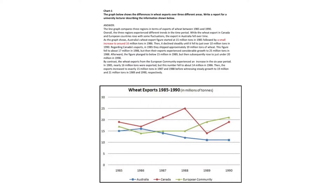In 1985, nearly 16 million tonnes were exported, but this number fell to about 14 million in 1986. Then the exports increased to exactly 15 million tonnes in 1987 and 1988, before witnessing steady growth to 19 million and 21 million tonnes in 1989 and 1990 respectively.